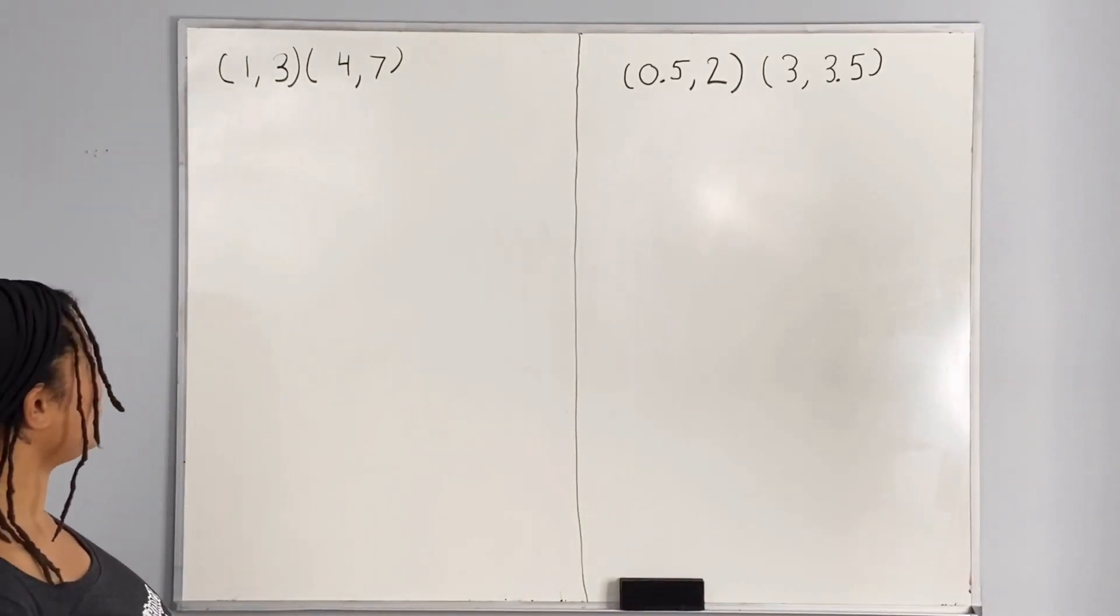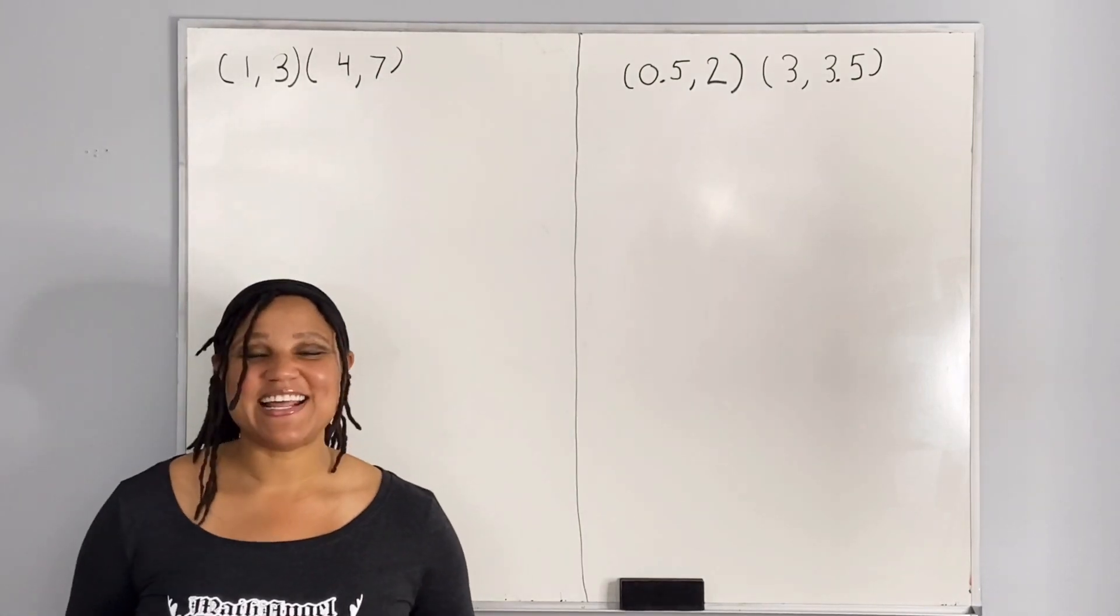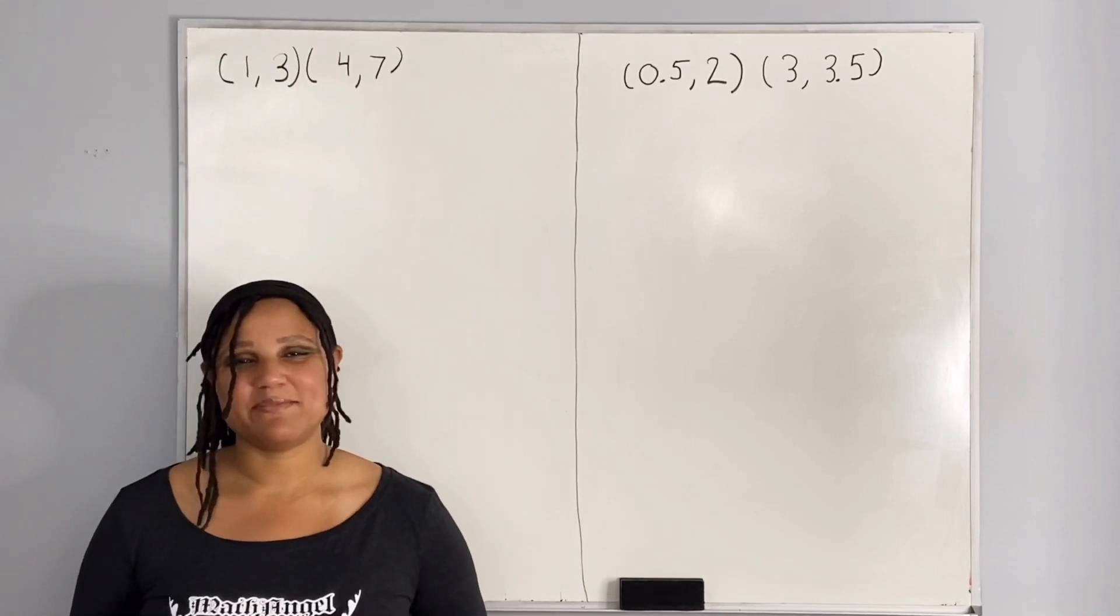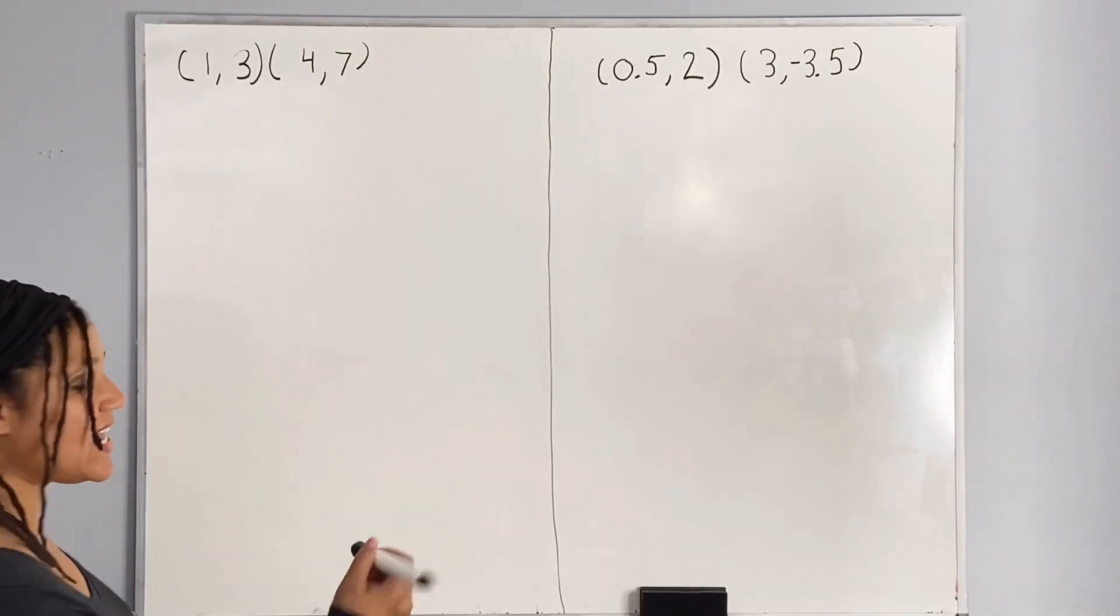Here we have the point (1, 3) and the point (4, 7). And we want to find the slope of the line through the given pair of points. So we need a formula, and our formula is as follows.